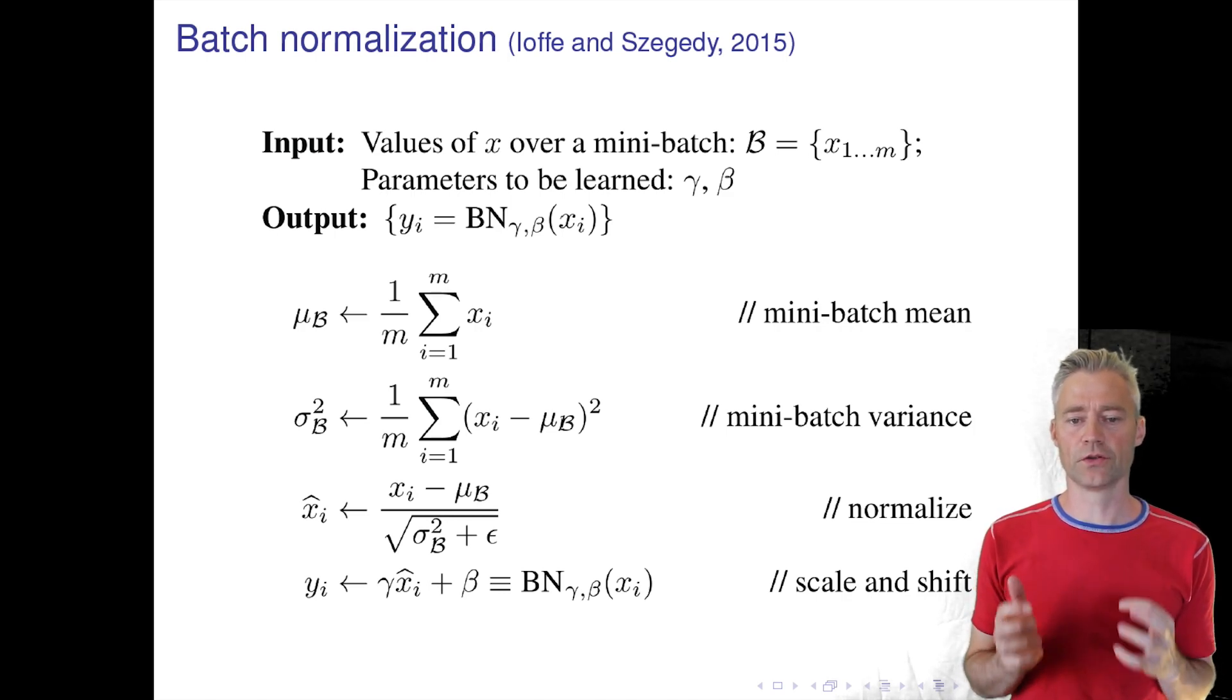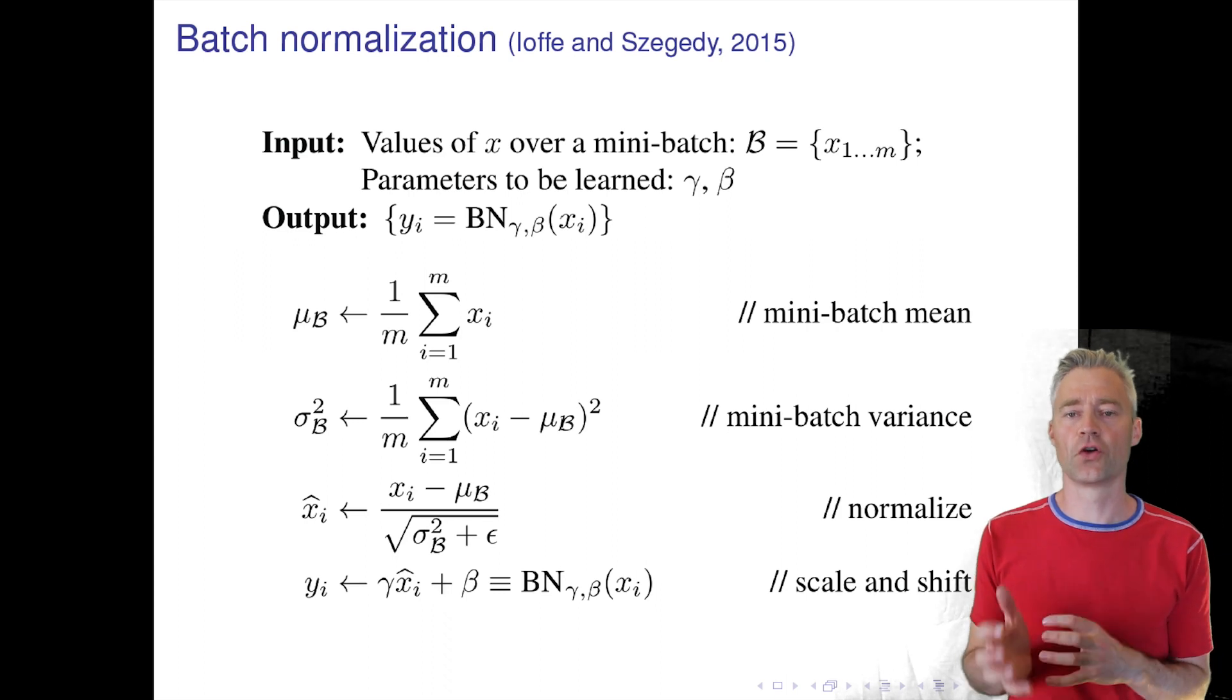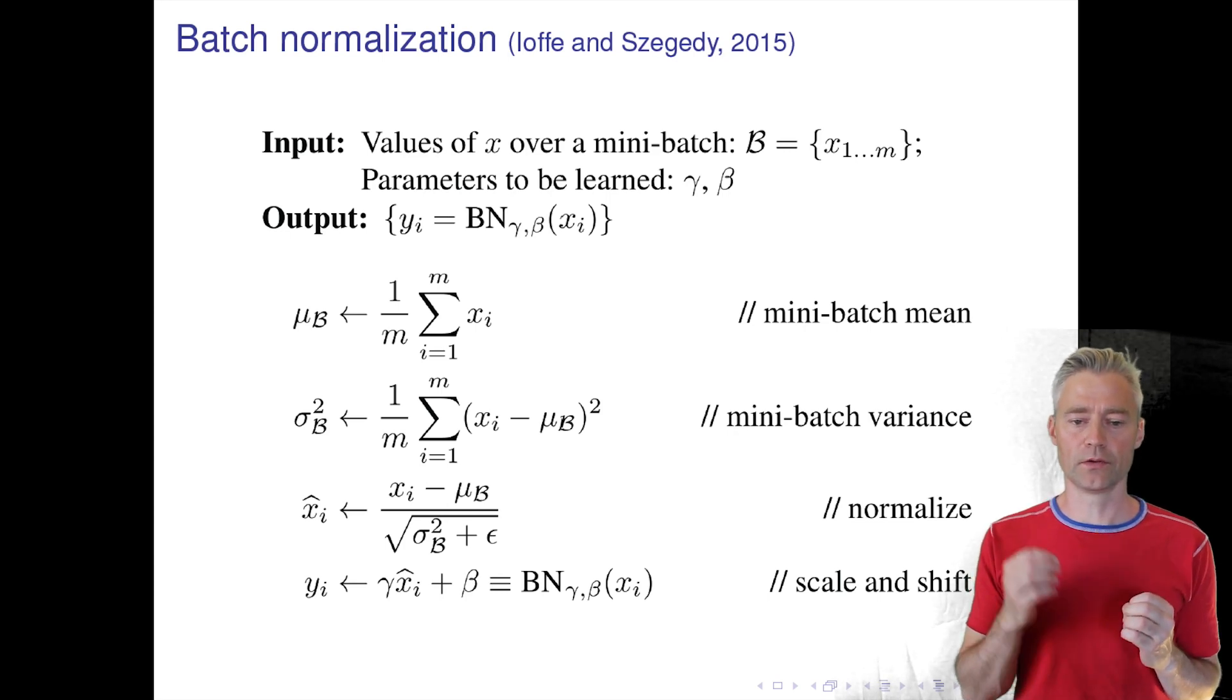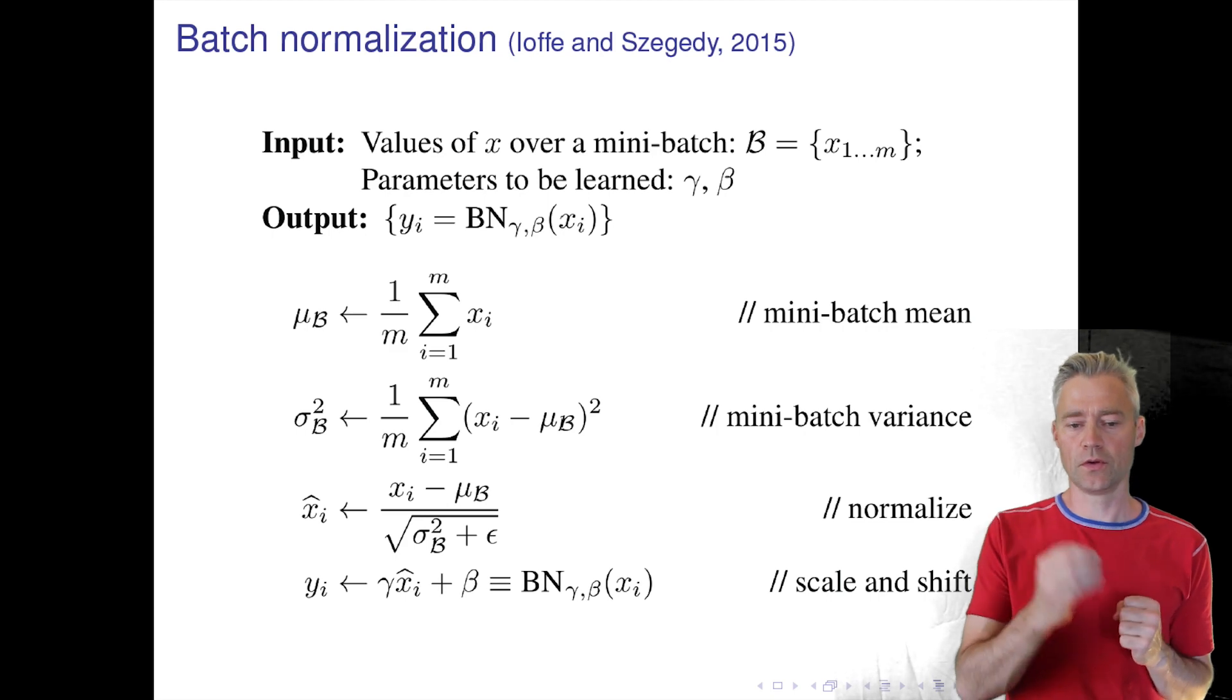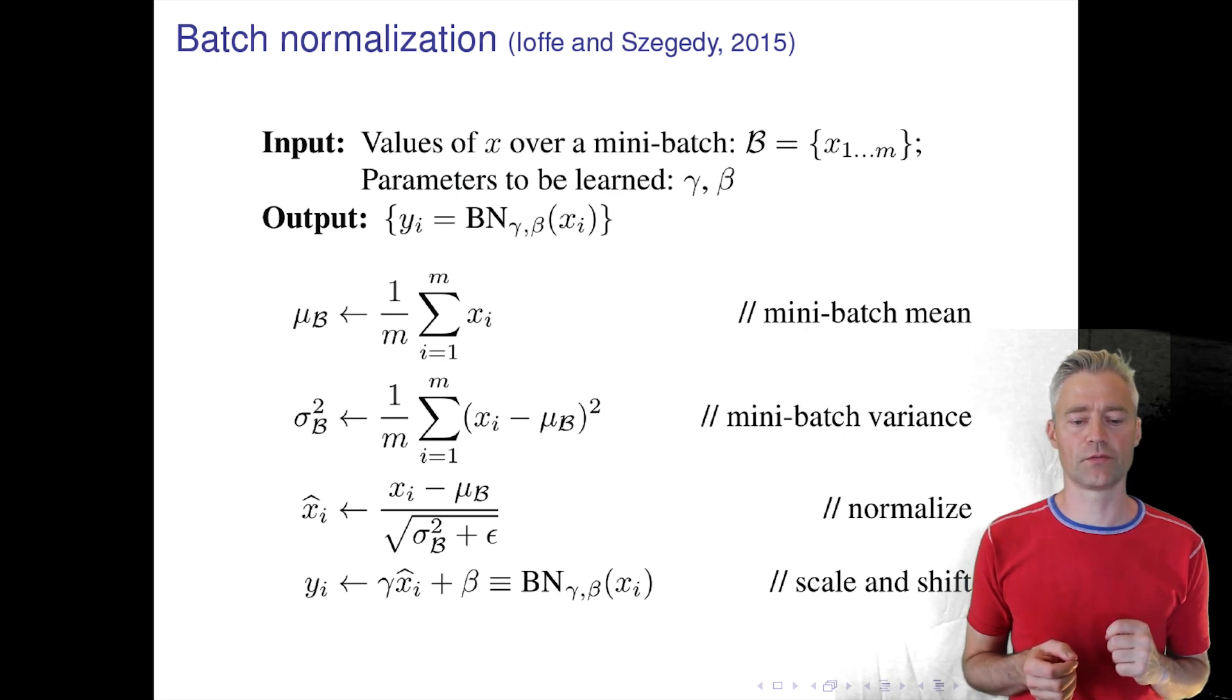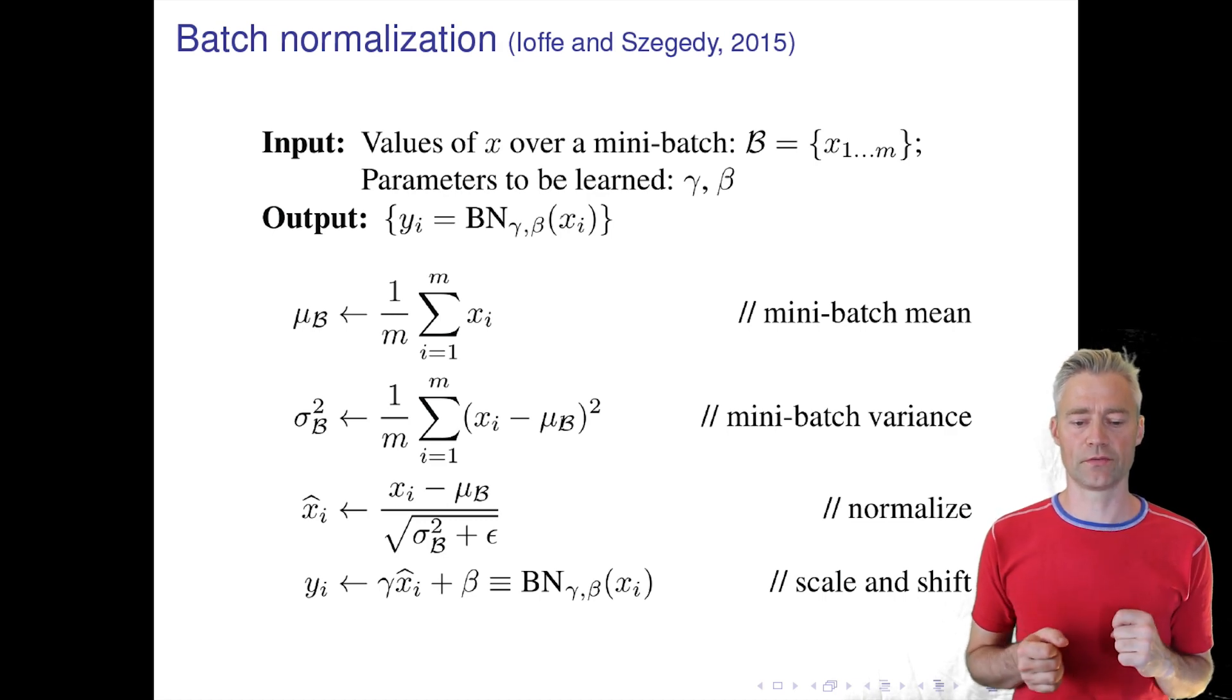So Ioffe and Szegedy had this idea of saying why don't we try to do the same thing internally inside the network. Here we look at a mini-batch of M examples and we want to calculate some value—it could be the pre-activation values or the output of a hidden unit—but we have some internal representation of the network. We can compute the mean of this mini-batch and we can compute the standard deviation or the variance, and then we can make a new variable X_hat where we have standardized the variable.